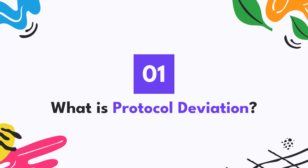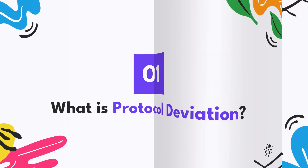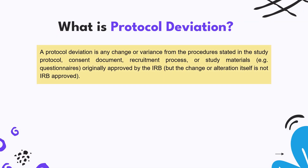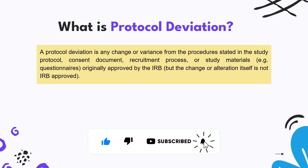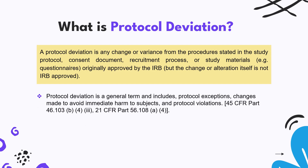Let us first understand what is protocol deviation. Protocol deviation is nothing but a change or variance from the study procedures which are stated in the study protocol, consent document, recruitment process, or study materials — all of which are originally approved by the IRB. Whenever you see a protocol deviation, it means a change from the study procedure mentioned in the study protocol, consenting document, or the recruitment process.